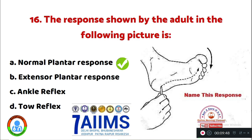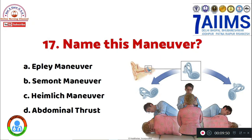Question 17: Name this maneuver. Option A: Epley maneuver. Option B: Semont maneuver. Option C: Heimlich maneuver. Option D: abdominal thrust. The right answer — this maneuver is called the Semont maneuver.